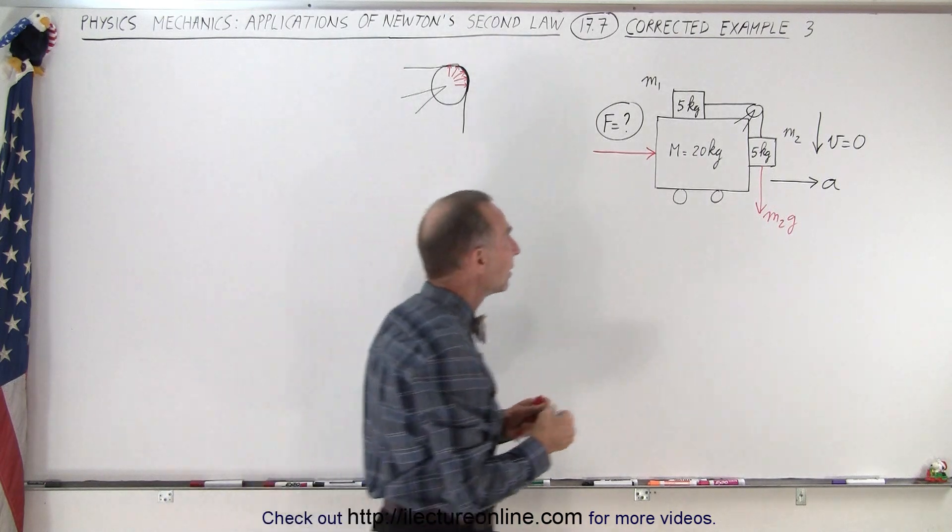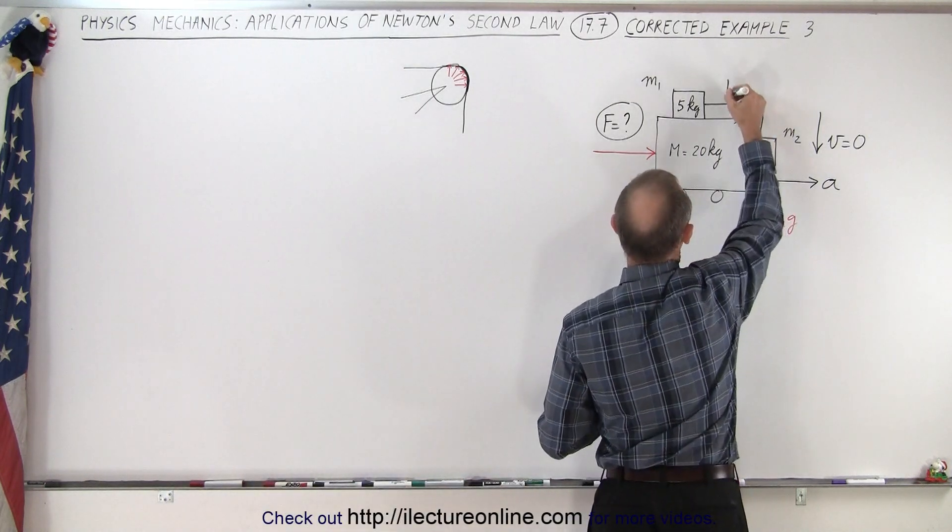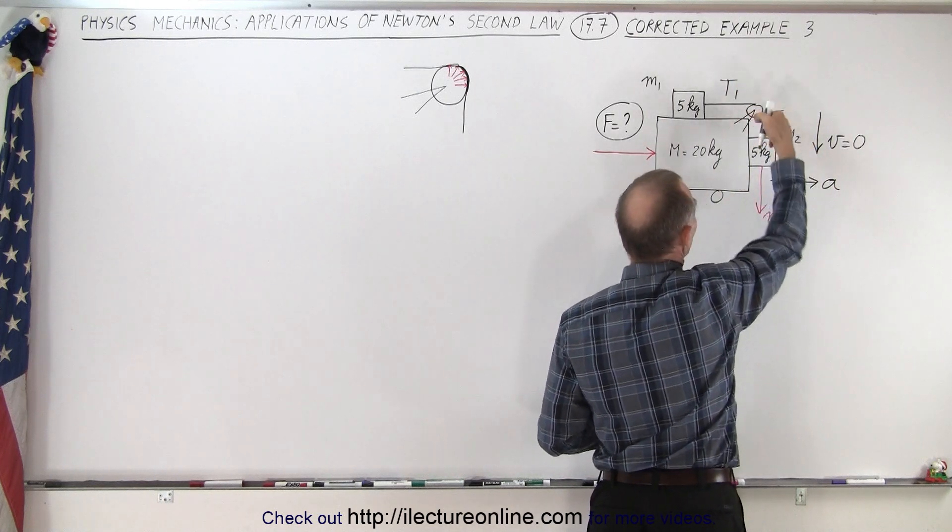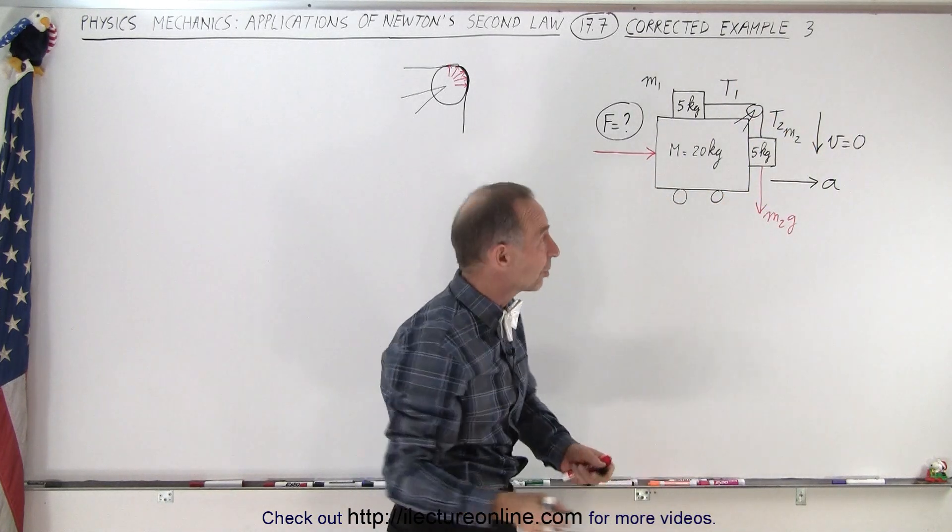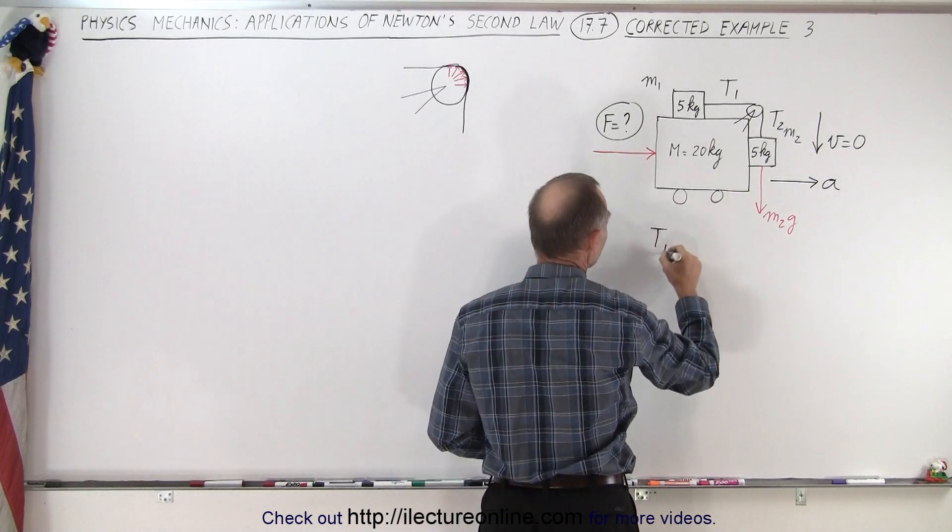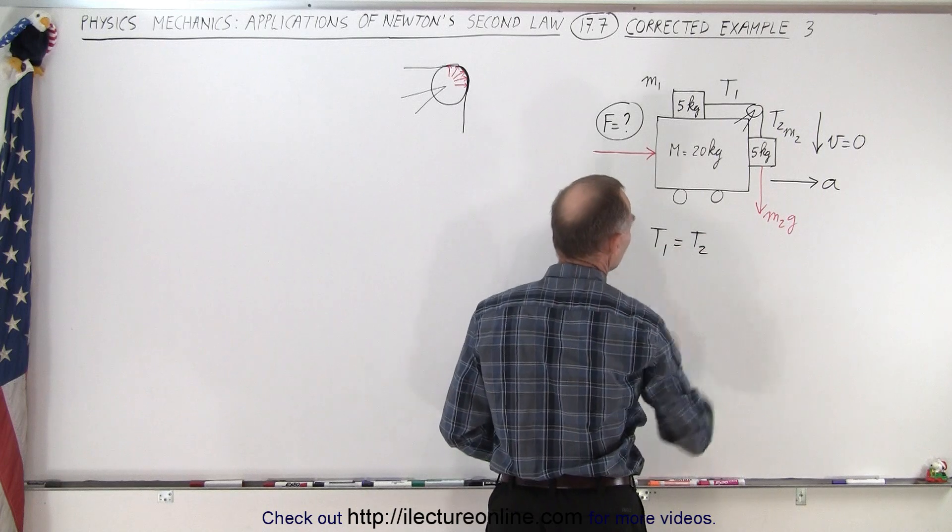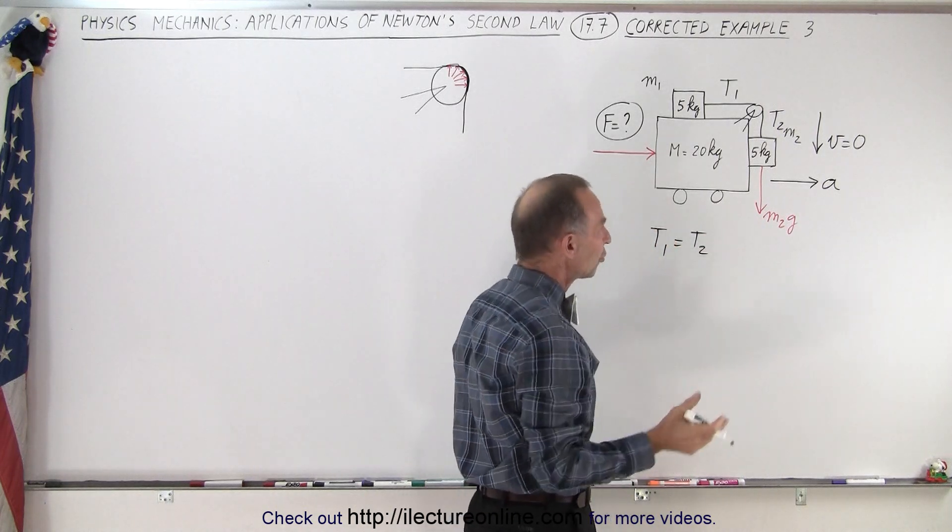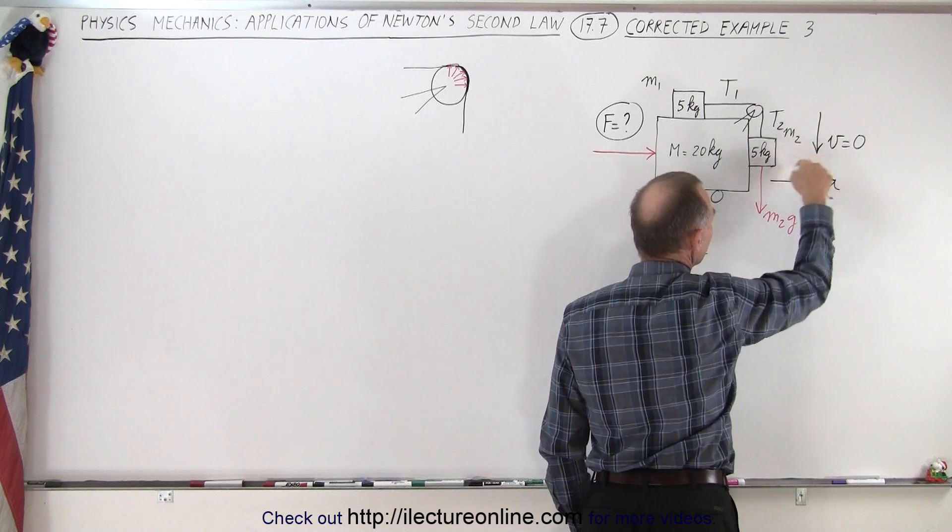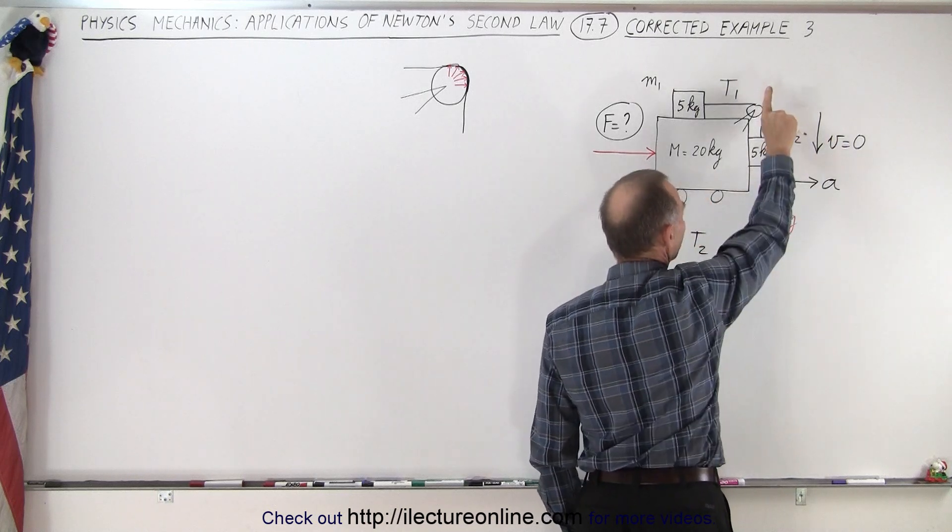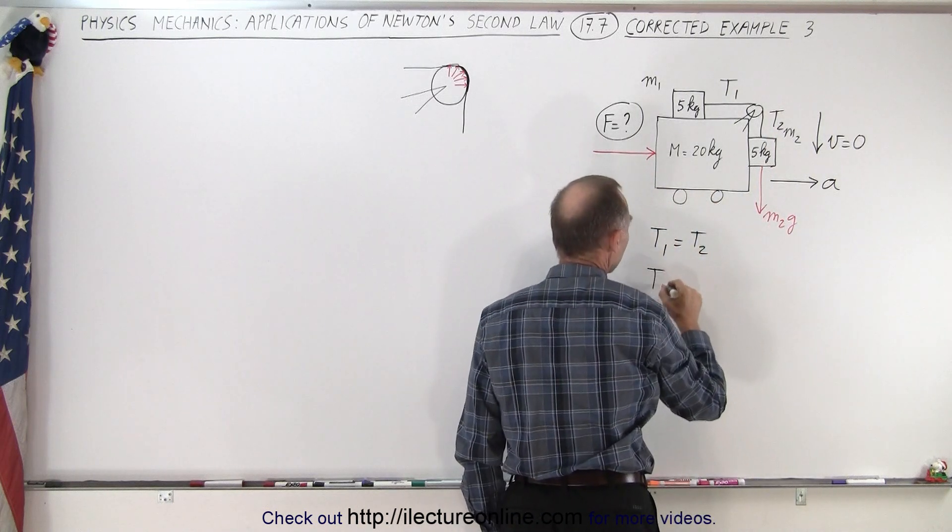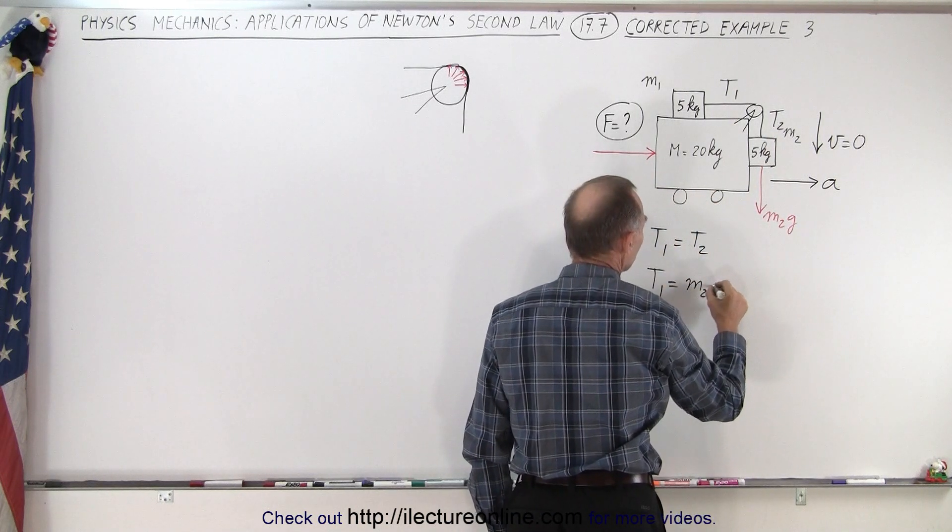What we can say is that the tension here, let's call it T1, and the tension there, let's call it T2. And since the pulley has no mass and no friction, we know that those two tensions must be the same. So tension one must equal to tension two. And let's assume that the velocity downward of this mass is equal to zero, which means that the force down must equal the force up and therefore T2 must equal M2G. So we have T1 is equal to M2G.